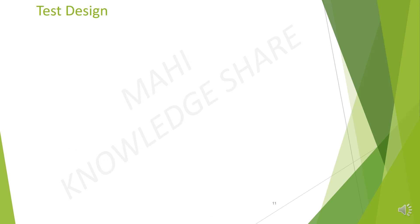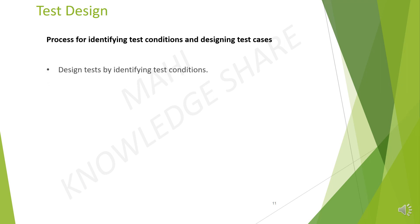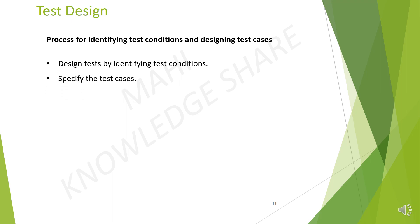Process for identifying test conditions and designing test cases. We need to design tests by identifying test conditions, then specify the test cases, then specify the test procedures, and then decide on the processes to be followed. The process can be done in different ways, from informal with little or no documentation to very formal with detailed documentation. The level of formality depends on the context of testing, including the organization, the maturity of testing and development processes, time constraints, and the people involved.